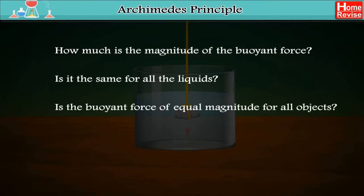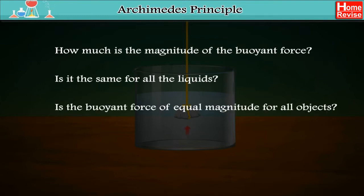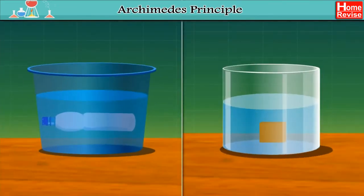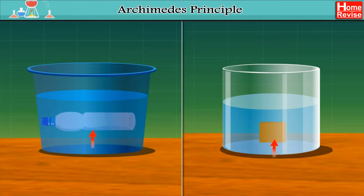The answers to these questions are embodied in Archimedes' principle. This principle states that when an object is partially or fully immersed in a fluid, a force of buoyancy acts on it in the upward direction. This force is equal to the weight of the fluid displaced by the object.